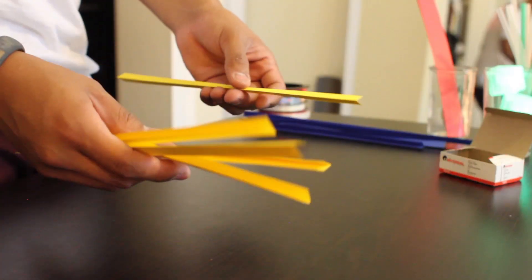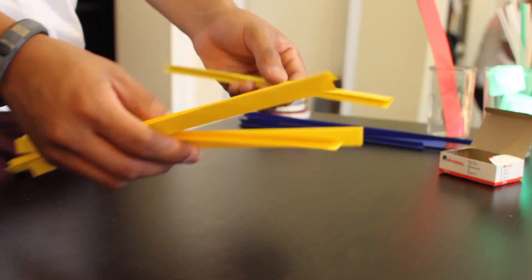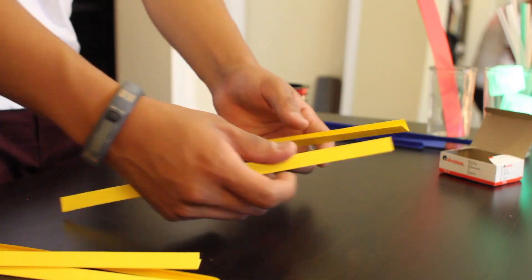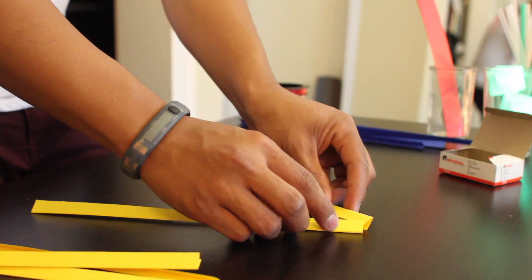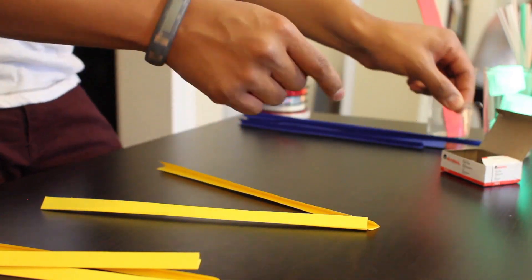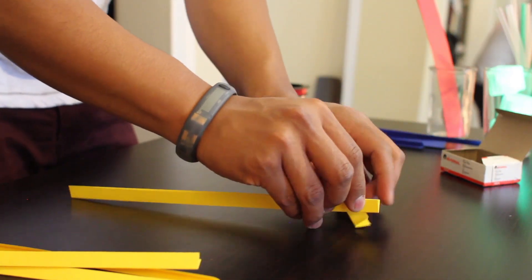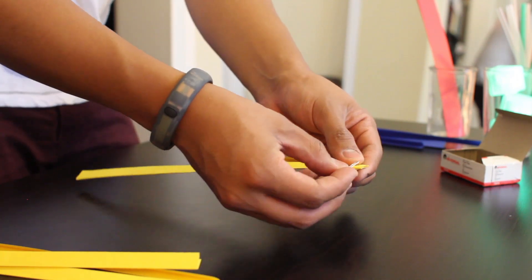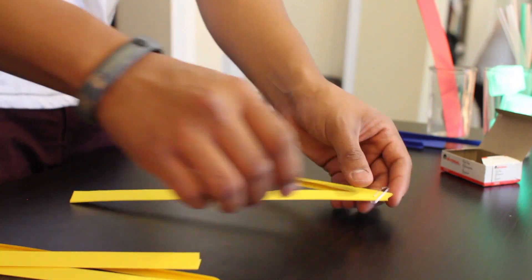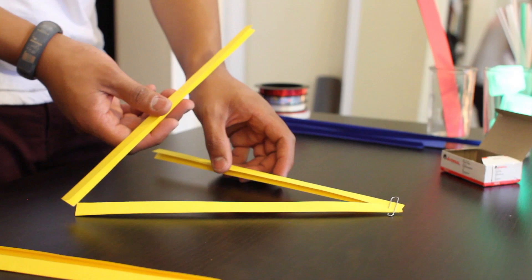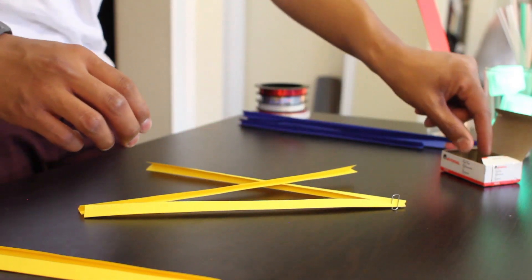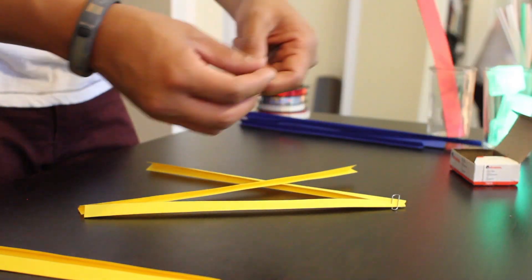Next, take your folded strips and create your star. Use paper clips to hold the tip of each point together while you're putting together your star. It's important that you have them actually weaving through so that your star can maintain its shape.